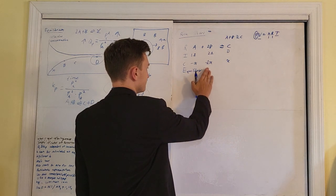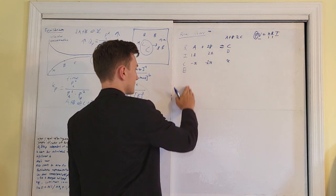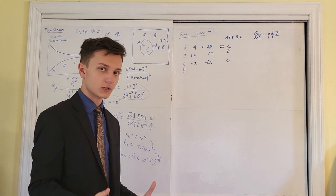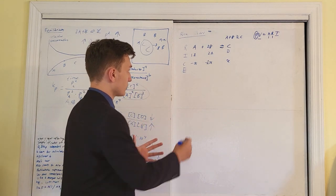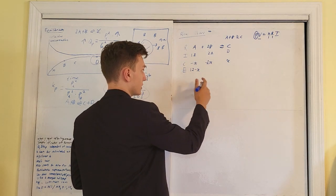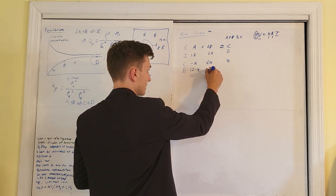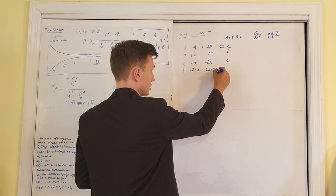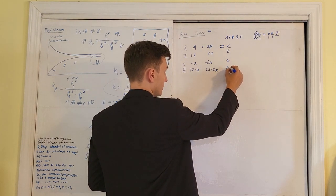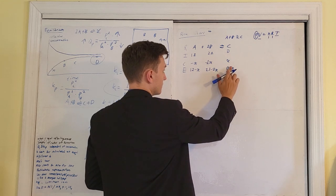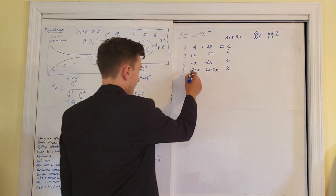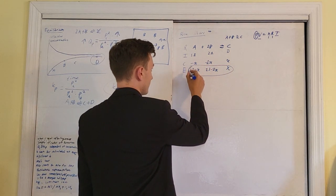The Equilibrium row is initial concentration plus or minus the change. For A it's 1.2 minus x, for B it's 2.1 minus 2x, and for C it's 0 plus x, which just reduces to x. So at equilibrium, this is what our reaction concentrations look like.